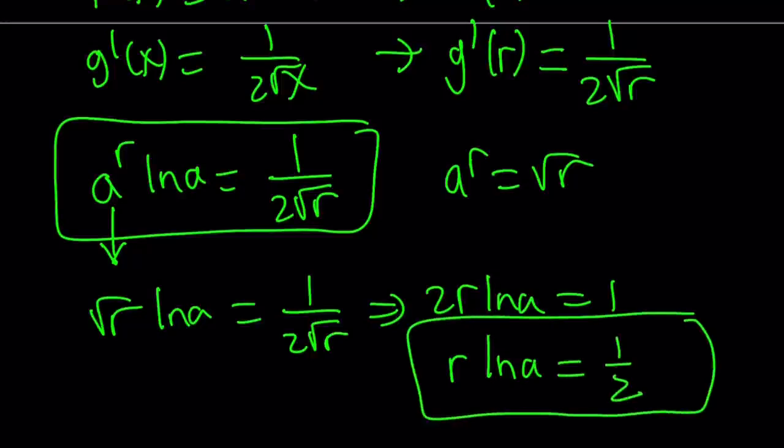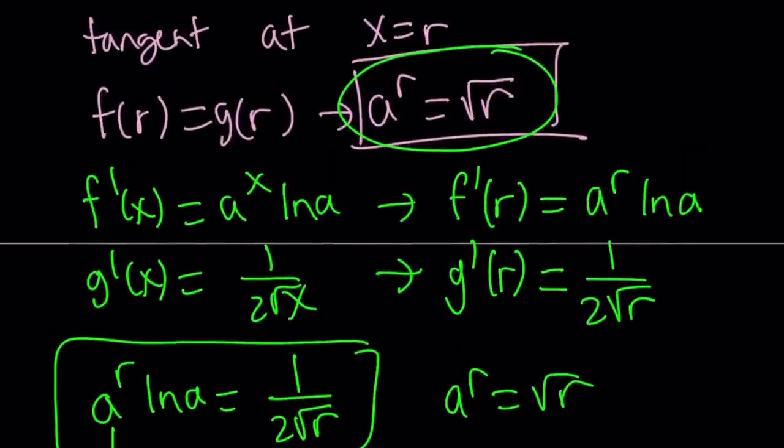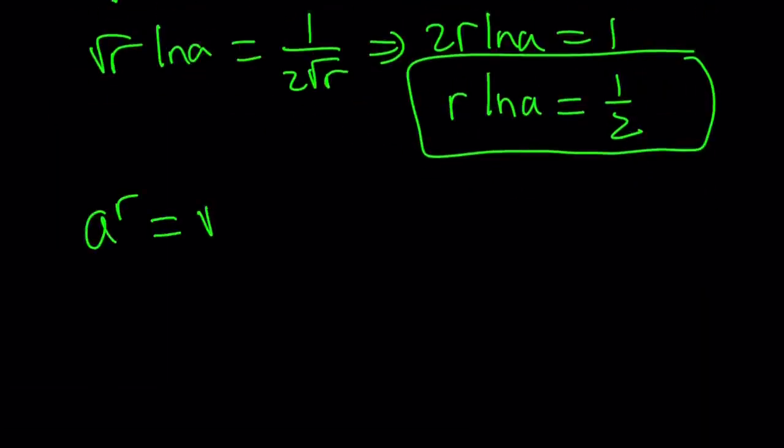Now, this may not look very helpful because we have two variables, but that's okay. We're going to use it efficiently. How? We're going to take this expression one more time. a to the power r equals square root of r. And then ln both sides. And that makes a lot of sense. You'll see. ln a to the power r equals ln square root of r, which can be written as ln r to the power 1 half.